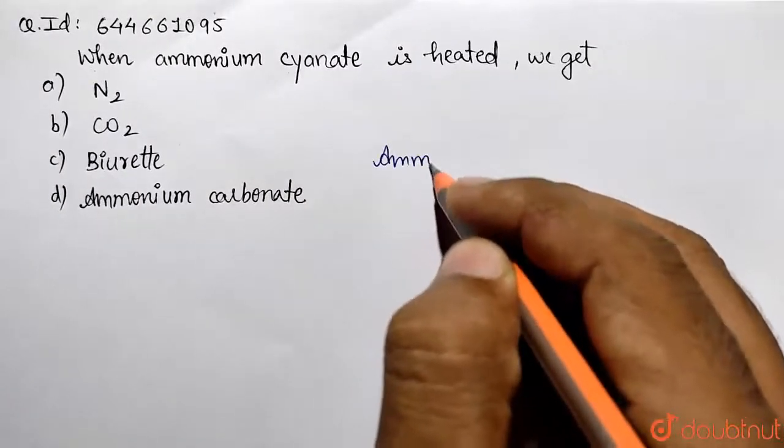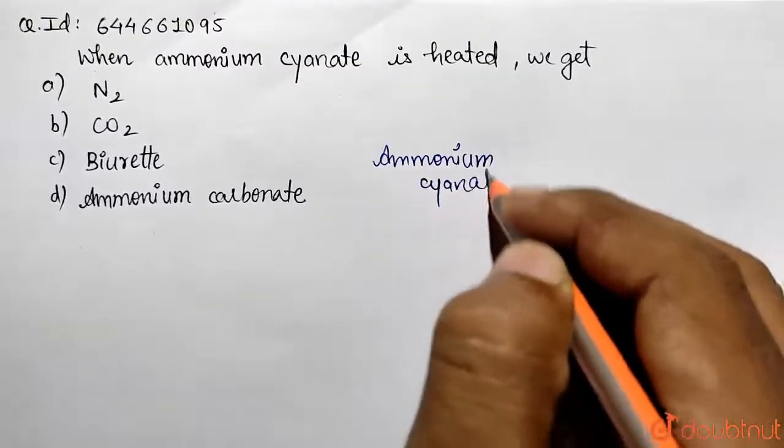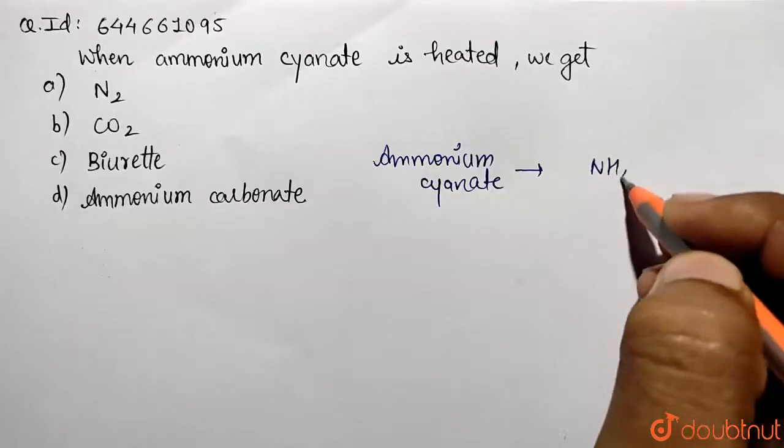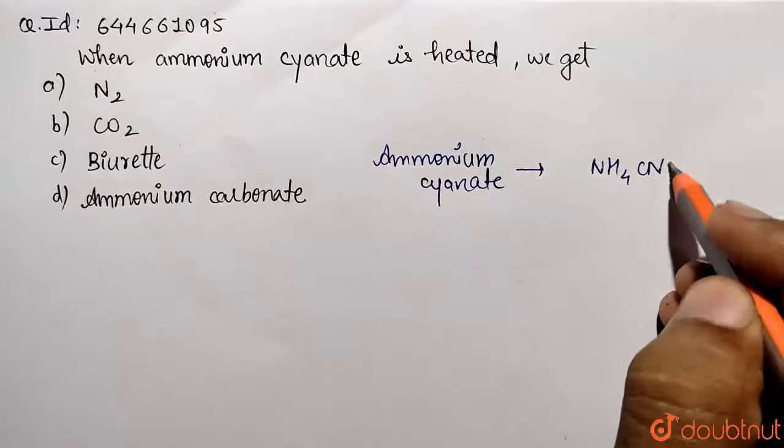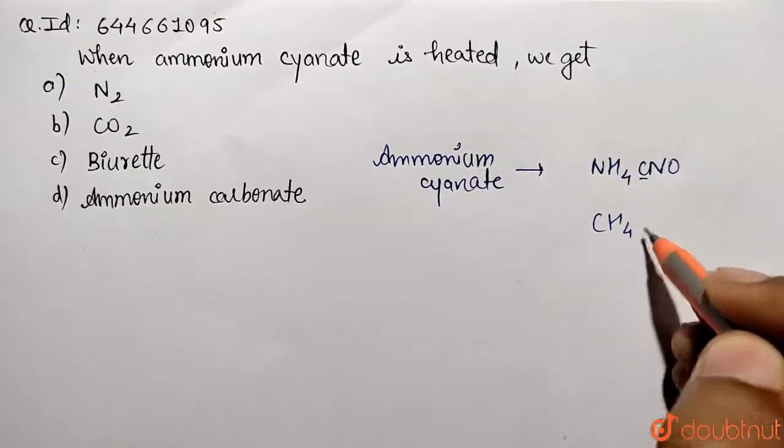So this is ammonium cyanate. It is being represented by the formula NH4CNO, or it can also be represented by CH4N2O. So this is our ammonium cyanate.